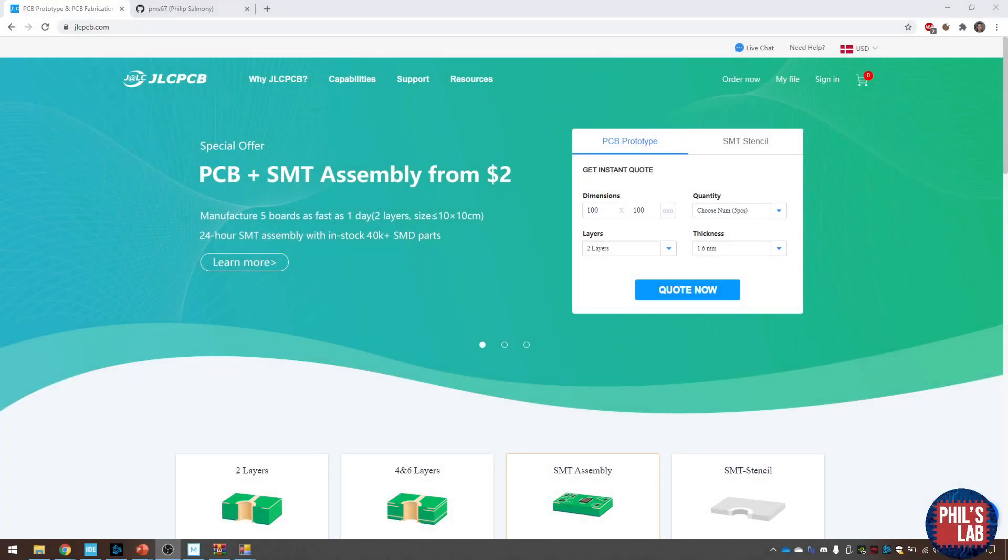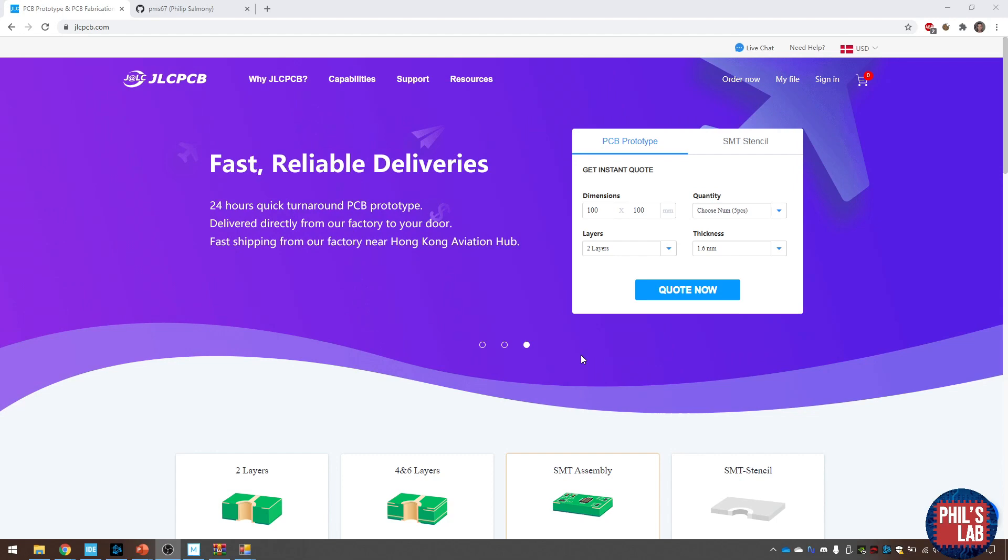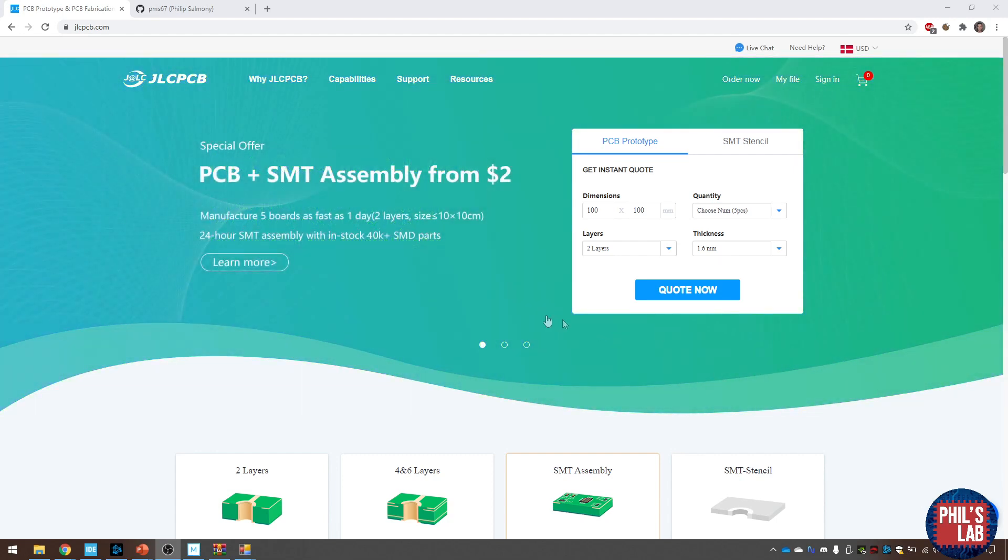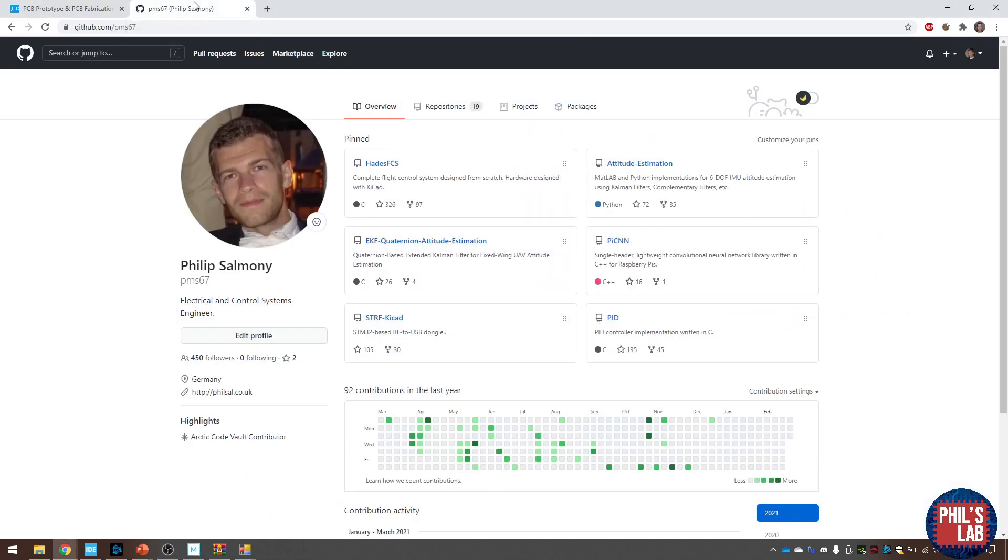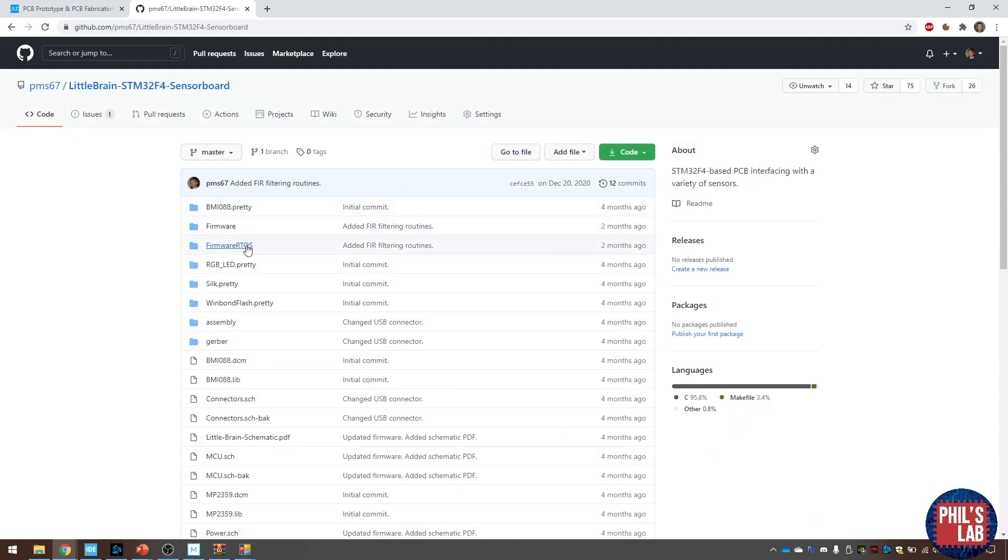As usual this video is sponsored by JLCPCB and the PCBs you saw at the beginning were actually manufactured and assembled by them. The cool thing is they actually assemble connectors now, so USB connectors, video connectors and any type of connector you could think of. If you'd like to order these little brain boards you can go to my github repository github.com/pms67, click on repositories and then find the little brain sensor board. I've provided all of the assembly and Gerber files so you can try out the board and get it produced at JLCPCB.